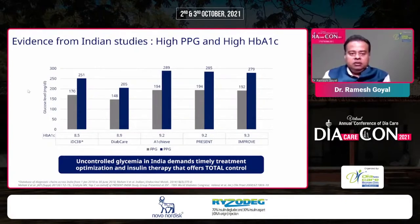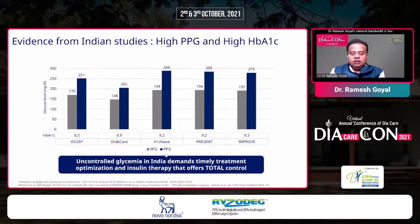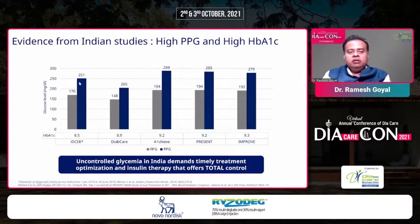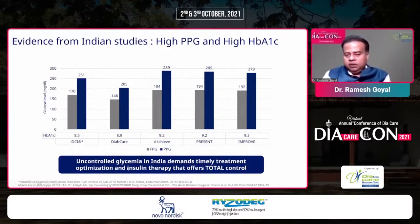The gray bars are the fasting plasma glucose values and the blue bars are the post-prandial glucose values. Across various studies — the IDCI trial, the DAPT trial, the ADVANCE-ACHIEVE trial, the PRESENT trial, and the IMPROVE trial — the mean HbA1c in our population varies from 8.5 to 9.5 percent. There is a significant burden of post-prandial glycemia; post-prandial values are always above 200 across all trials, ranging from 200 to 219. Uncontrolled hyperglycemia in India demands timely treatment optimization and insulin therapy that offers total control of both fasting and post-prandial hyperglycemia.